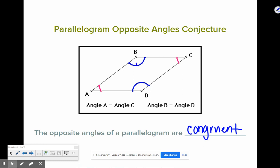So that means angle B and angle D are congruent. Angle A and angle C are congruent.